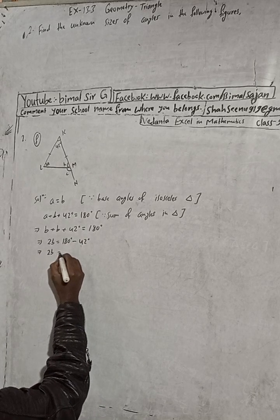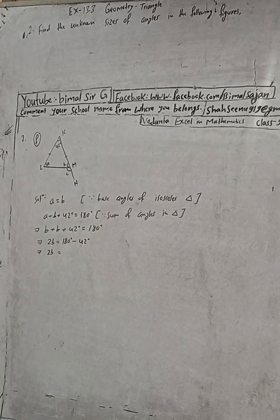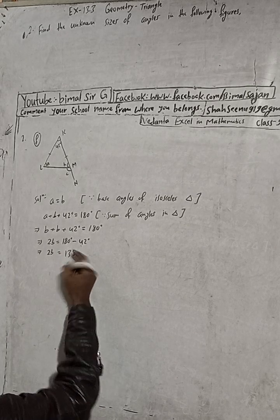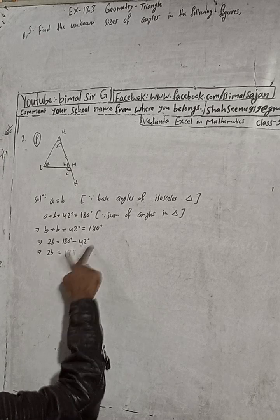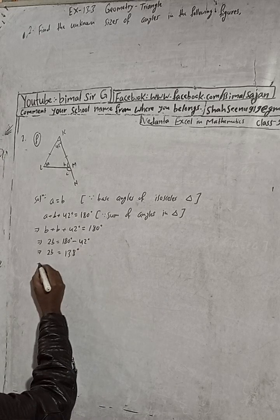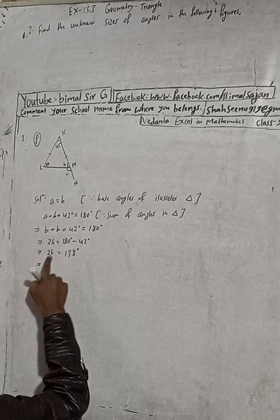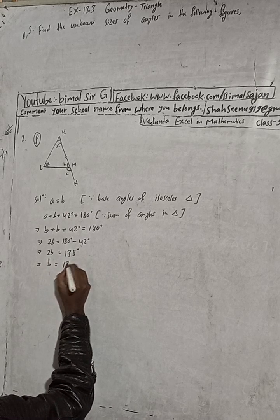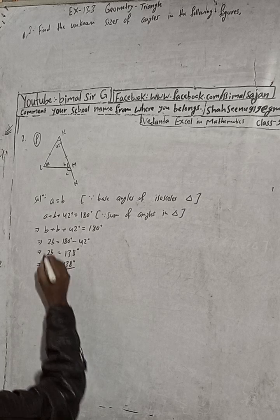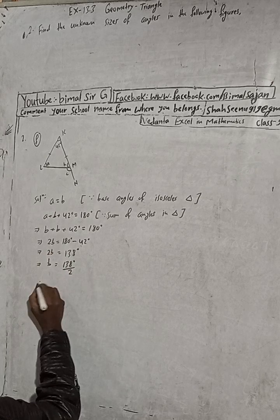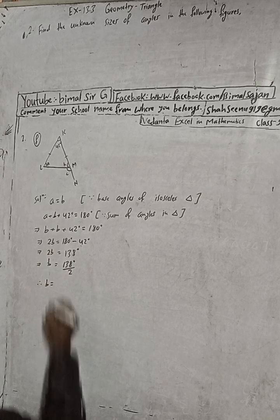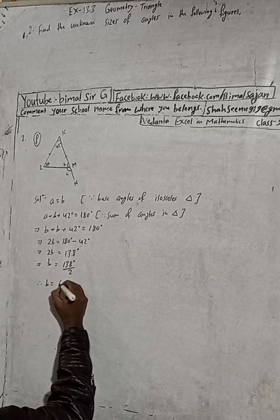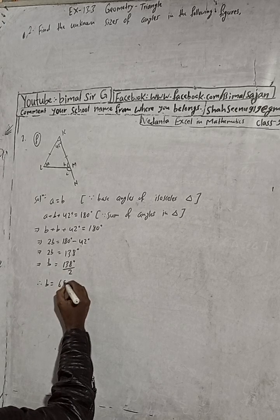This implies 2B equals 180 minus 42, which is 138 degrees. So 2B equals 138 degrees. This implies B equals 138 divided by 2, therefore B equals 69 degrees.